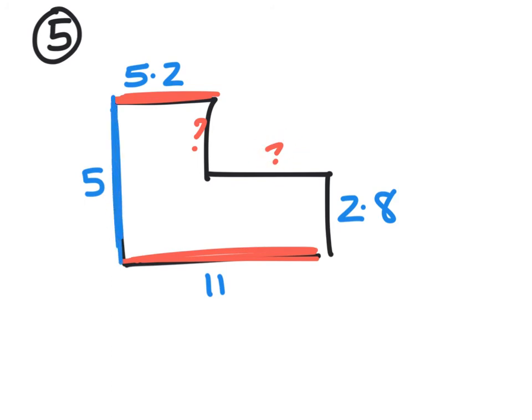Similarly for the vertical sides: we know this is 5, we know this is 2.8, so we should be able to calculate this other vertical side. Then the perimeter is just all these numbers - 1, 2, 3, 4, 5, 6 numbers added together.